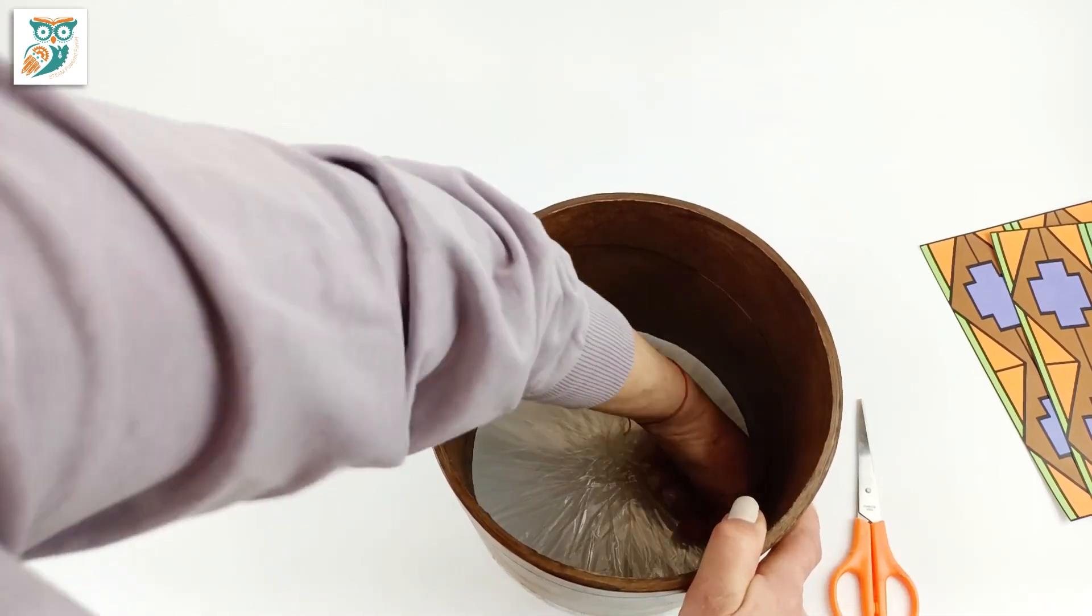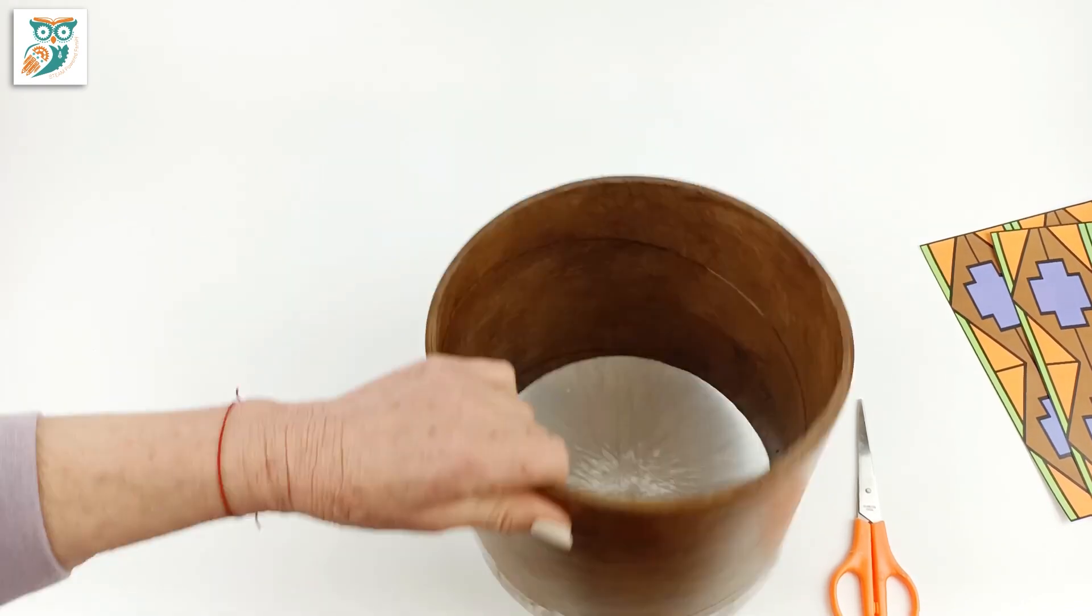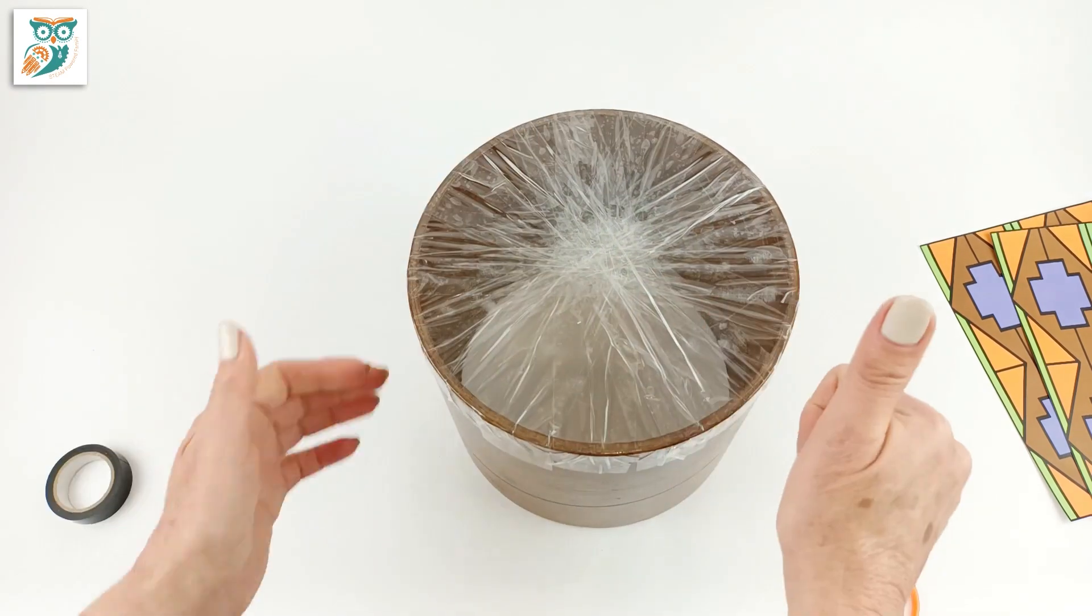There we go, the skin is all done. Now we're going to flip it over and press down on that tape to make sure it's all really nicely adhered so that the layers are nice and solid.